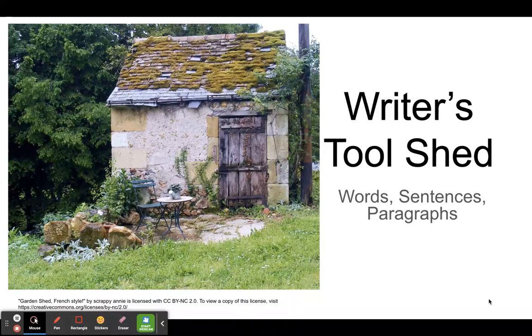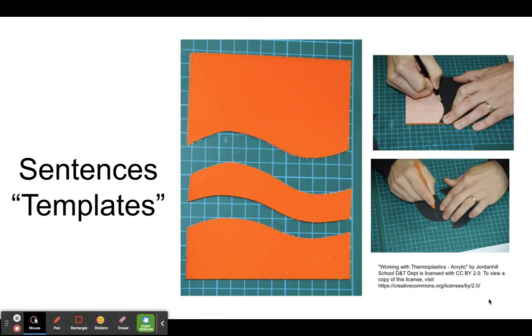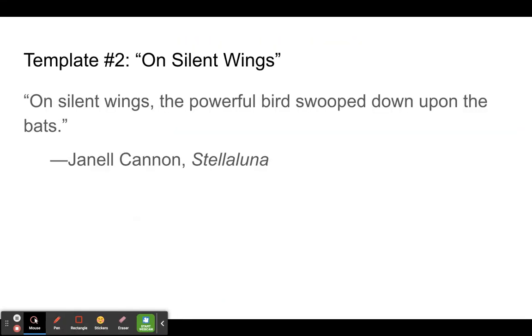Hello writers, here's our second part of the Writer's Tool Shed, where we go into our sentences or templates that help us mold our words after a very specific structure so that we can give more maturity and more beauty to our sentences.